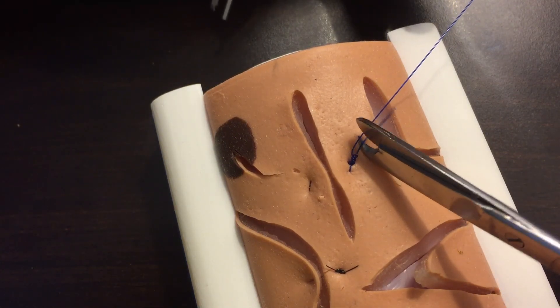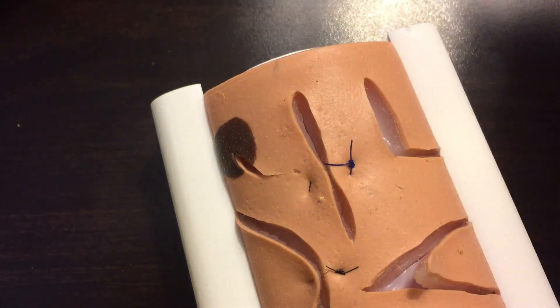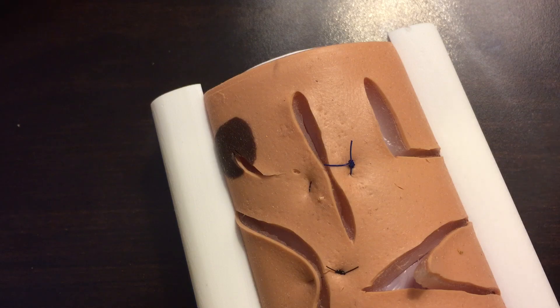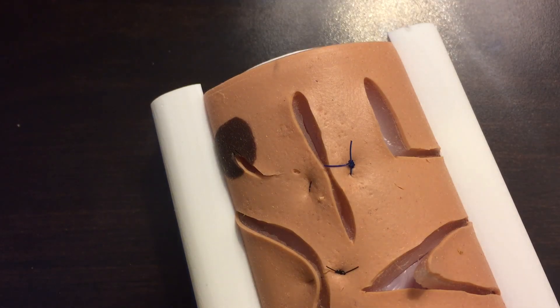If you do something under tension like this with a simple interrupted suture, oftentimes it's going to invert the skin edges even if you did everything correctly. You just have too much tension then, so it turns everything in.